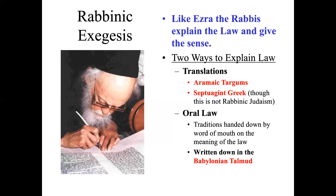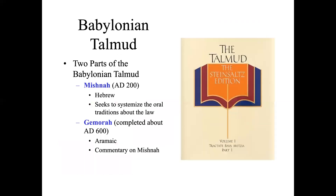In practice, the Talmud came to supplant the Bible as the object of study for pious Orthodox Jews. The Mishnah, written down around AD 200 and basically in Hebrew, seeks to systematize the oral traditions about the law that rabbis were handing down orally. The Gemara, completed around AD 600 and written in Aramaic, is a commentary on the Mishnah. The Mishnah and the Gemara together constitute the Babylonian Talmud.